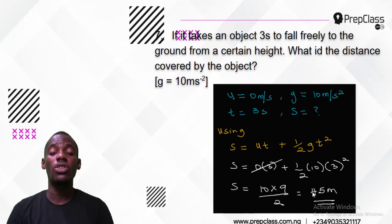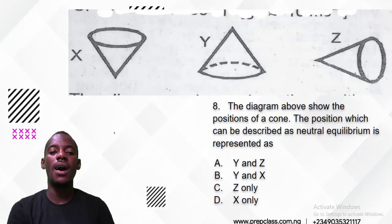Question 8: The diagram above shows the positions of a cone. The position which can be described as neutral equilibrium is what?